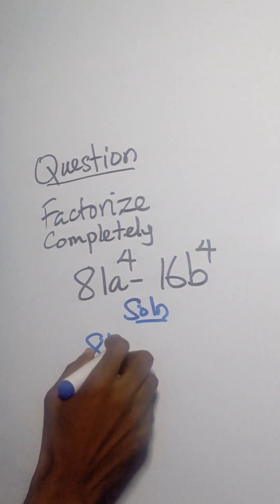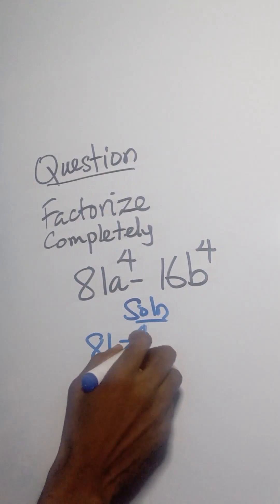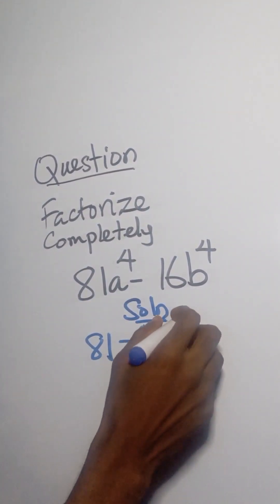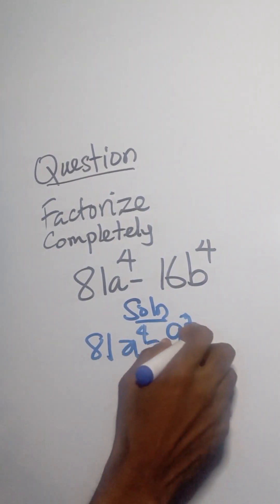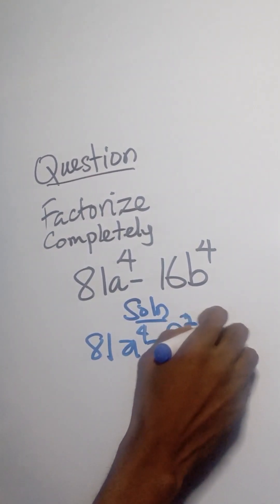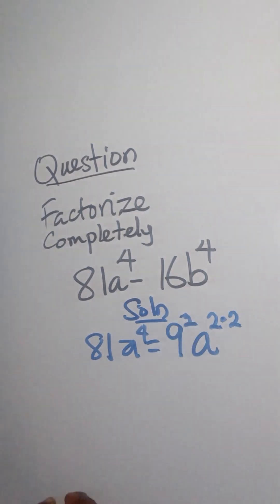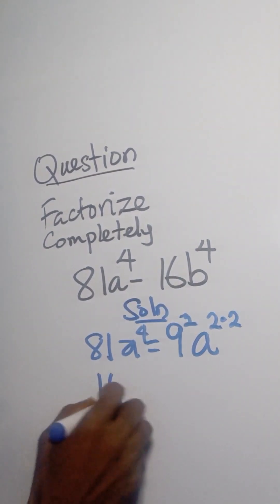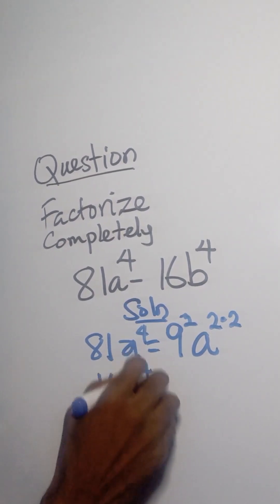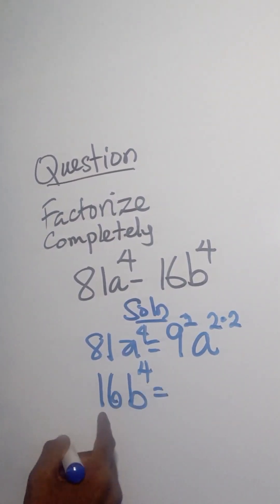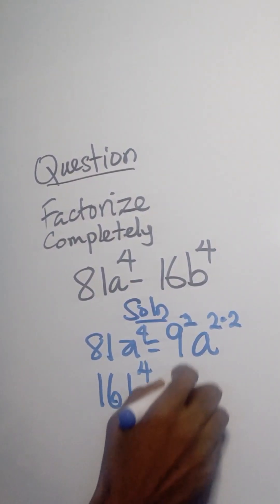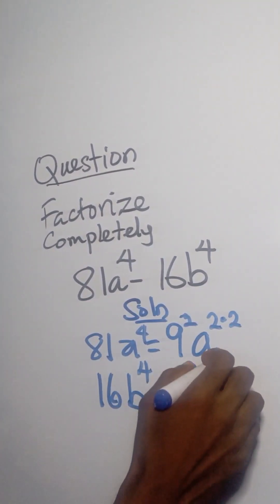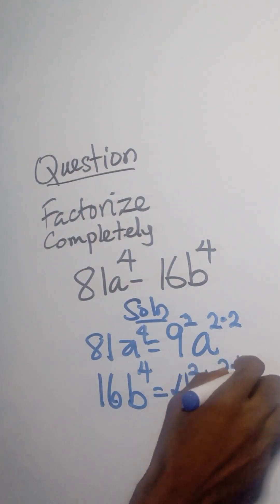For our next question, 81a raised to the power of 4 — 81 means 9 squared, and a raised to the power of 4 means a raised to the power of 2 times 2. What about 16b raised to the power of 4? 16 means 4 squared, and b raised to the power of 4 means b raised to the power of 2 times 2.